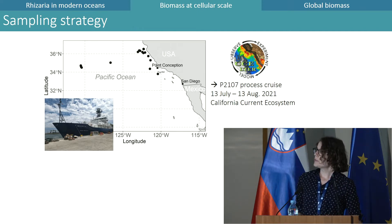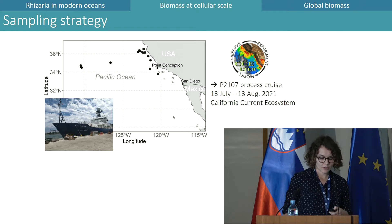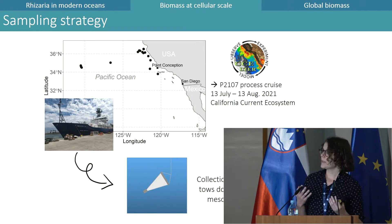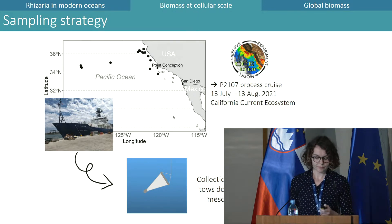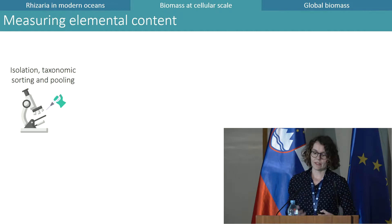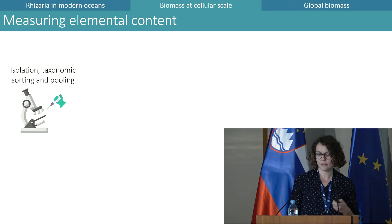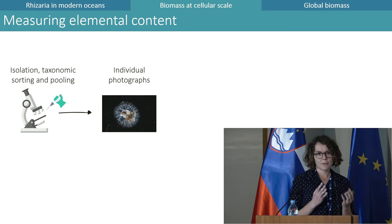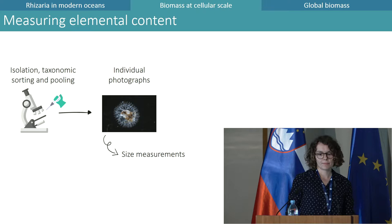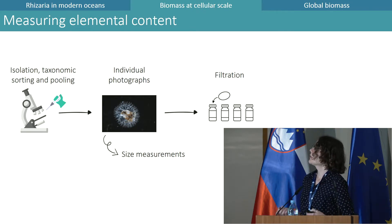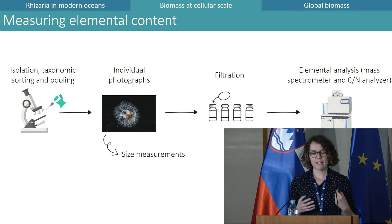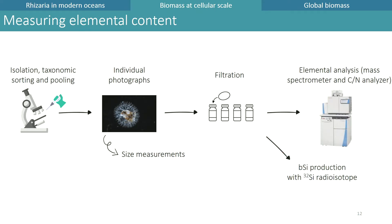To answer the first question, we collected Rhizaria specimens in 2021 in the California Current in various environmental conditions down to the mesopelagic, using nets. We then isolated and pooled together several specimens belonging to the same taxa. For each individual we took pictures to get size measurements. We filtered the pools of individuals and analyzed the filters through a CHN analyzer. We also kept a few samples to assess biogenic silica, but found no significant link to size, so this talk focuses only on carbon and nitrogen contents.